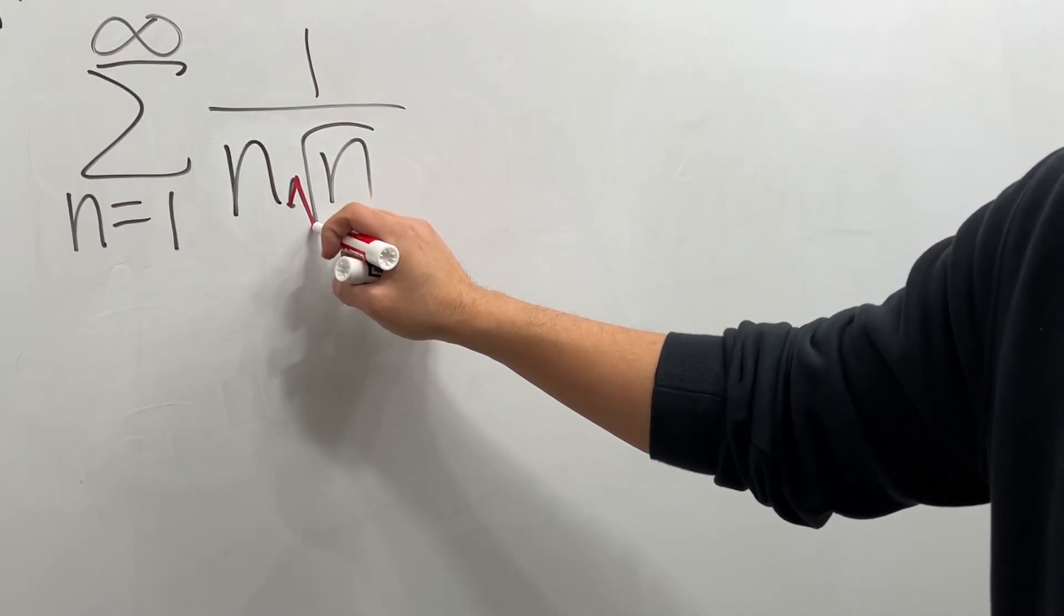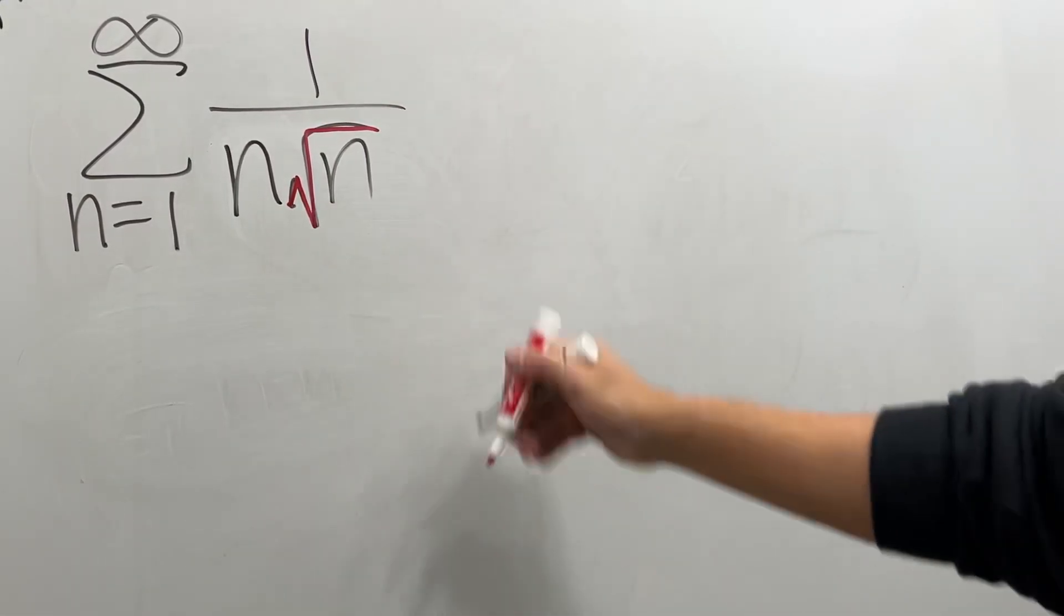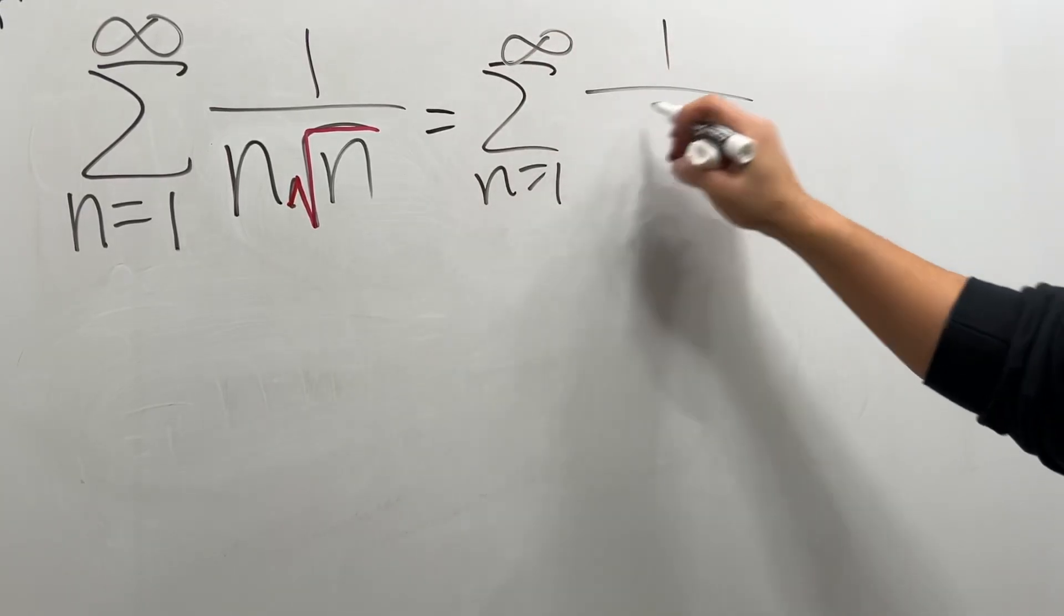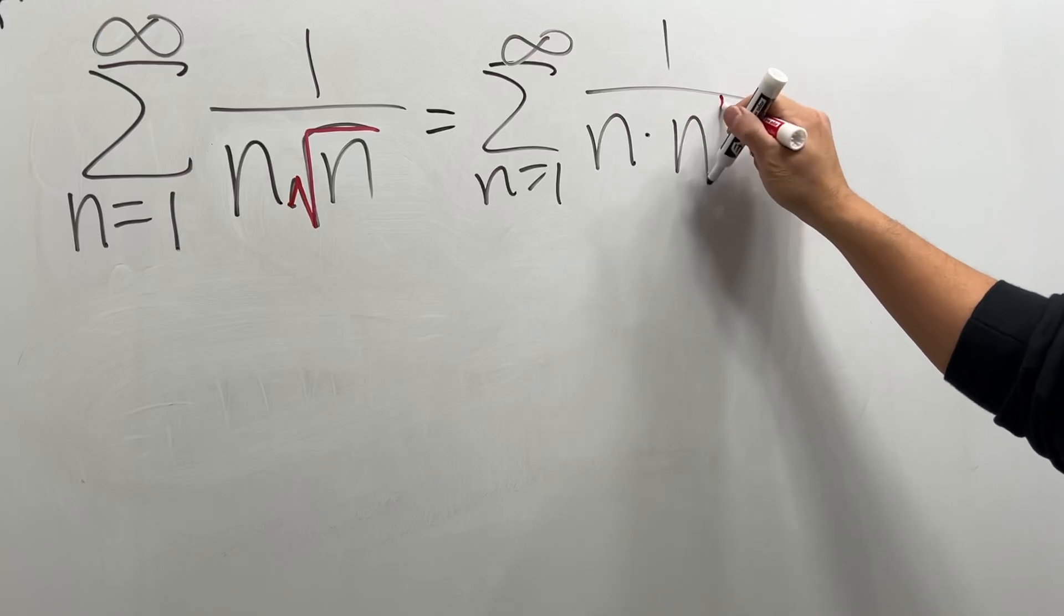The key is to take a look at the square root, which is the same as 1 half power. This right here is the same as series as n goes from 1 to infinity of 1 over n times n to the 1 half power.